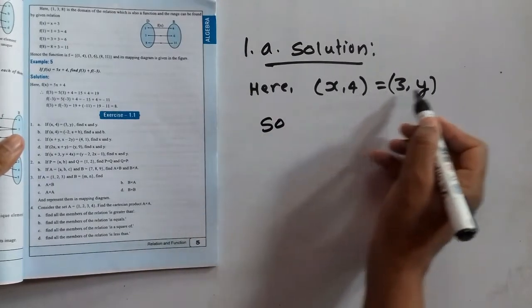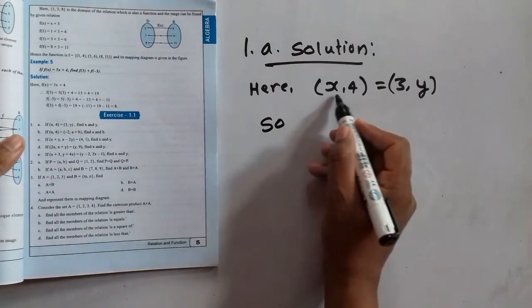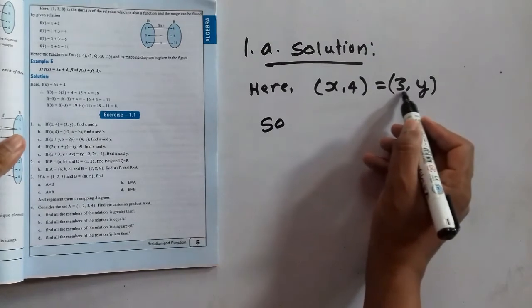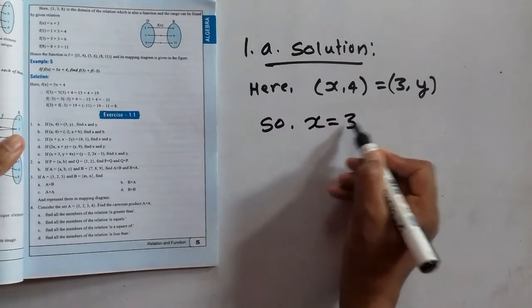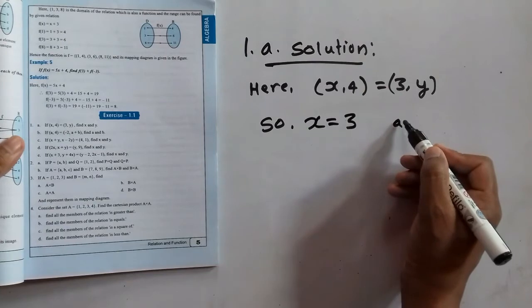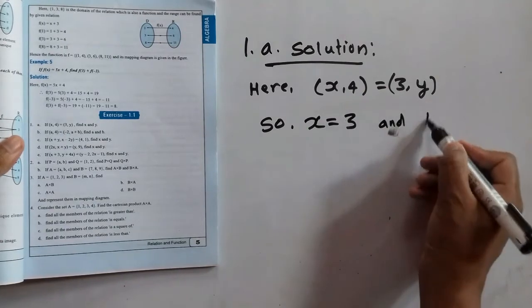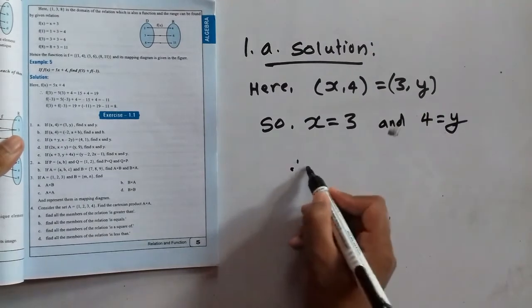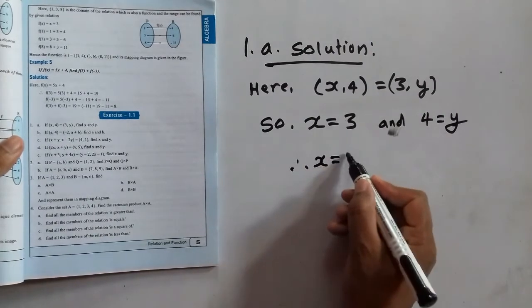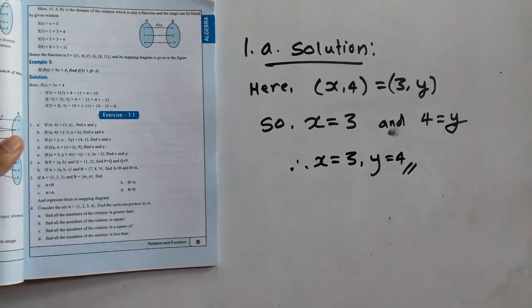So this ordered pair is equal to this ordered pair. So the first element of this first ordered pair should be equal to the first element of this second ordered pair. So x is equal to 3 and 4 is equal to y. Therefore, x is equal to 3 and y is equal to 4. This is our answer.